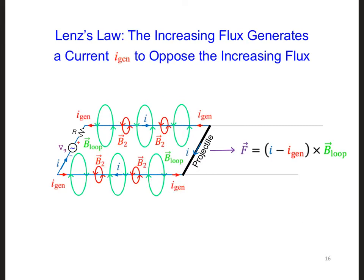This generation of B2 in the opposite direction of B loop is called Lenz's Law. Here you can see a better diagram where we have all the currents, both the currents labeled, and also both of the B fields that are labeled. And so basically what this does, this I-generated current does, is that it reduces the total current flowing in the wire loop, which in turn is going to reduce the amount of force that our projectile will experience.